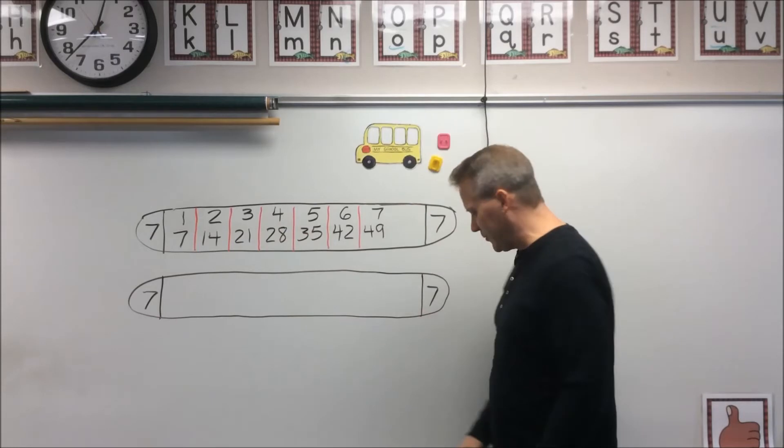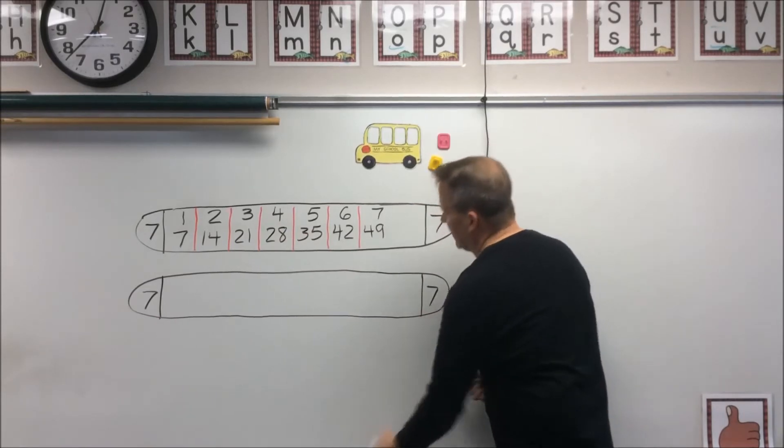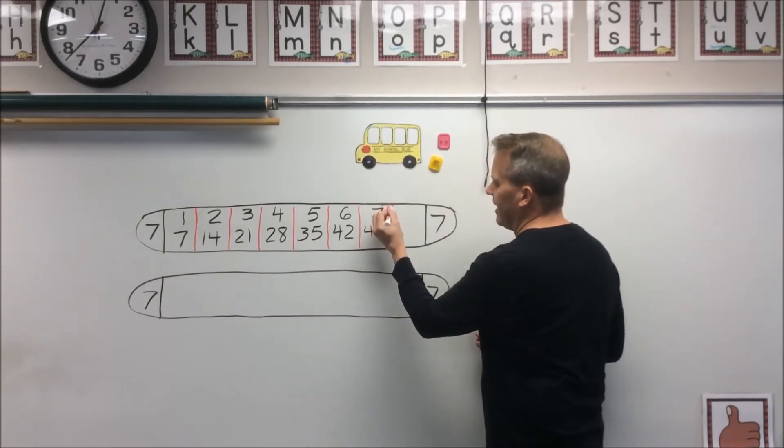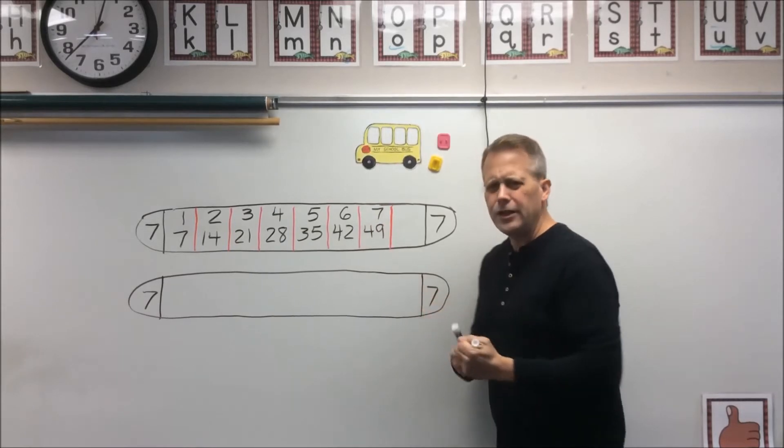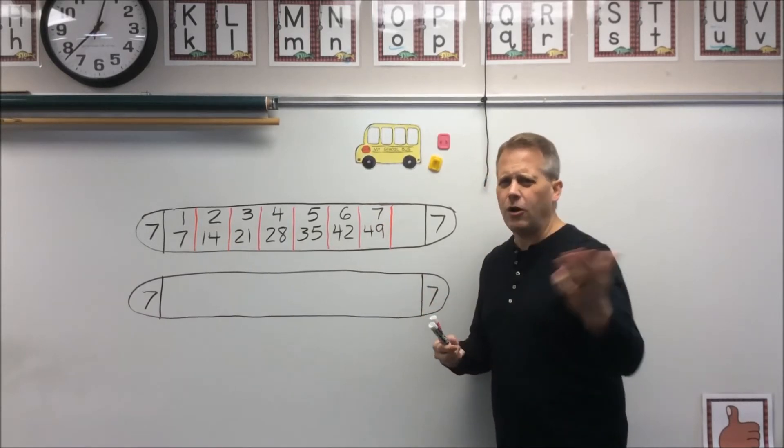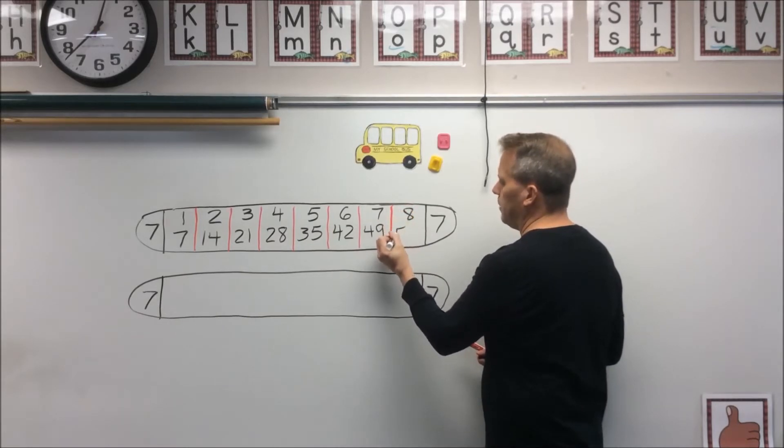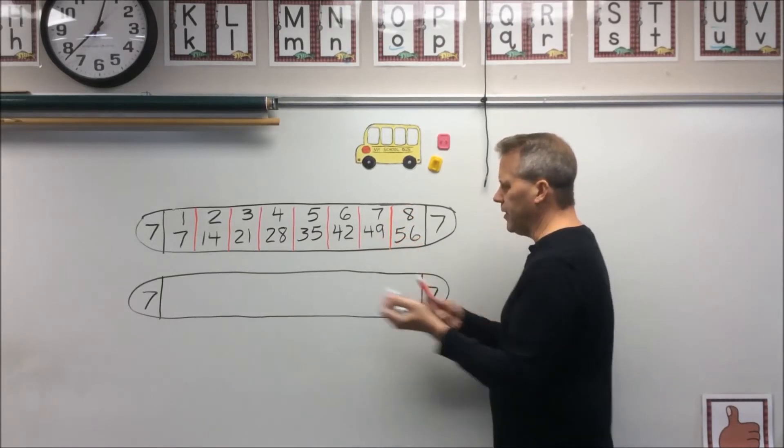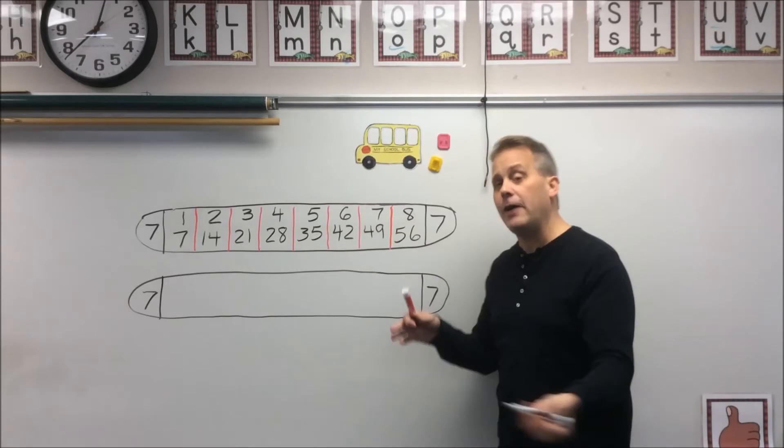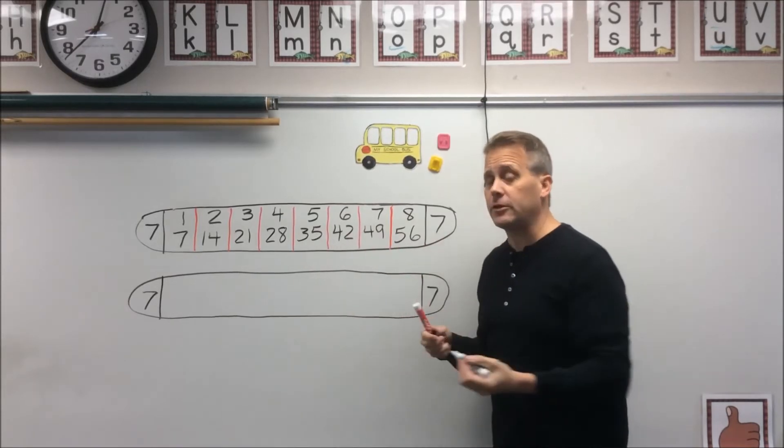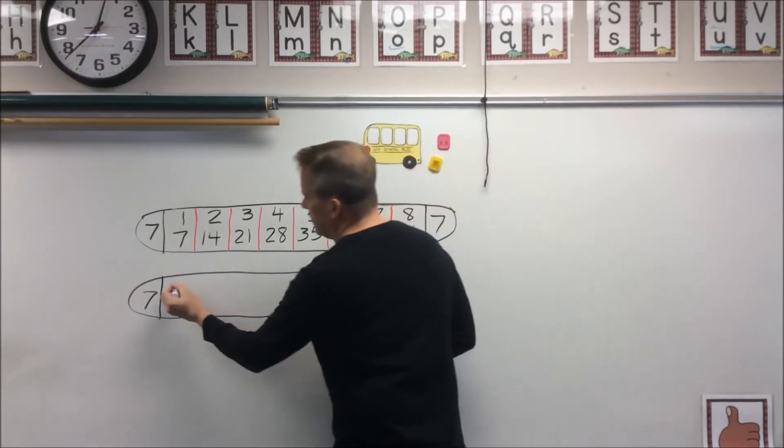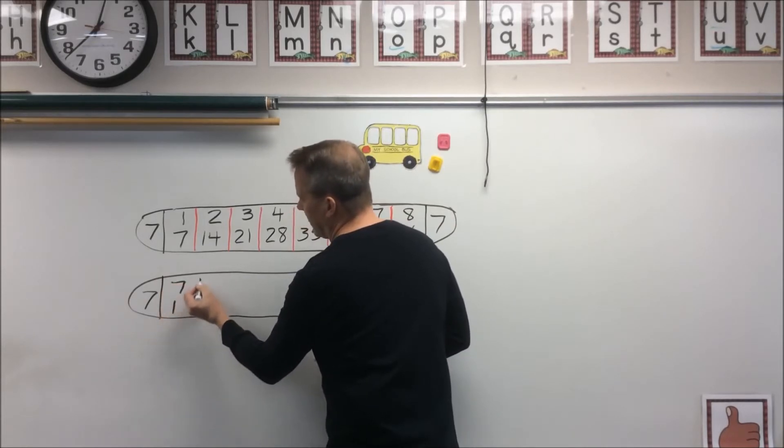Now I've got this first popsicle stick with my multiplication facts. I'm just going to write it out. You can write all of your multiplication facts as far as you want on that popsicle stick, but obviously I've run out of room. Now when you flip the popsicle stick over, this is where you can write your division facts.